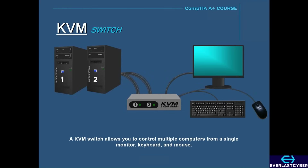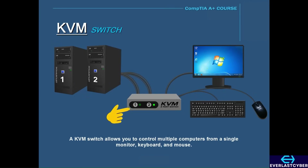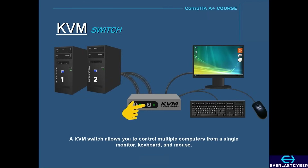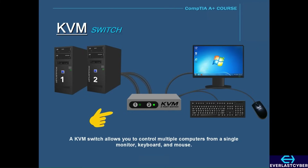A KVM switch allows you to control multiple computers from a single monitor, keyboard, and mouse. A KVM is typically a box with ports for video, mouse, and keyboard, and each computer has its own individual cable connections to the KVM. Buttons on the KVM let you switch between computers. KVMs come in different sizes — a low-end model can control two computers, while a higher-end KVM can control eight. This saves both money and space.